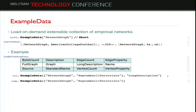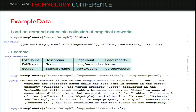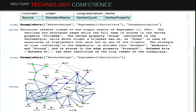For example, I'm going to load the September 11 terrorist network. Here's the description — a terrorist network linked to the tragic events of September 11. And here's the actual graph, nicely formatted. You can see the names of nodes and their relationships.